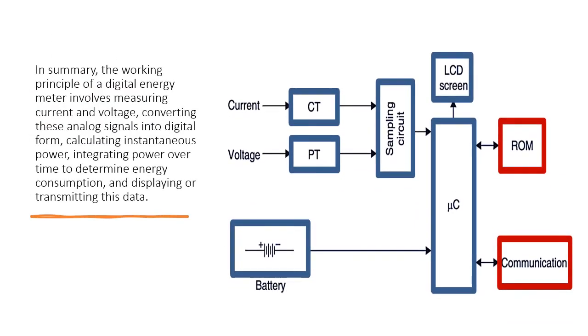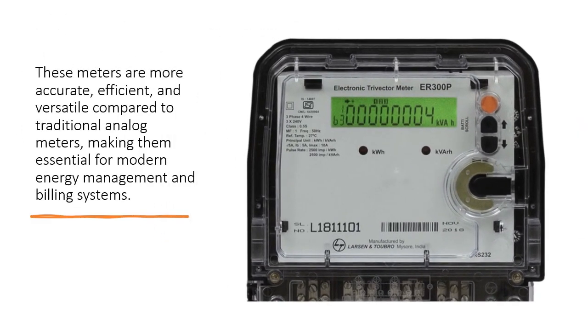In summary, the working principle of a digital energy meter involves measuring current and voltage, converting these analog signals into digital form, calculating instantaneous power, integrating power over time to determine energy consumption, and displaying or transmitting this data. These meters are more accurate, efficient, and versatile compared to traditional analog meters, making them essential for modern energy management and billing systems.